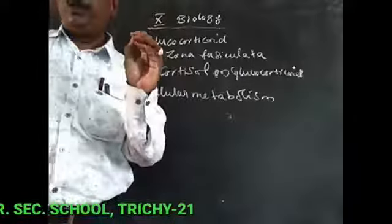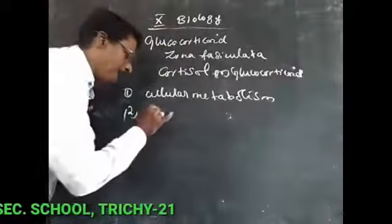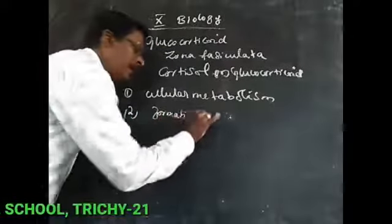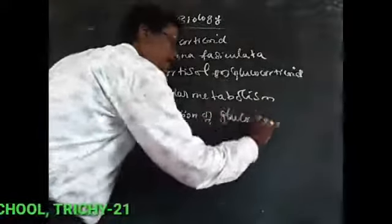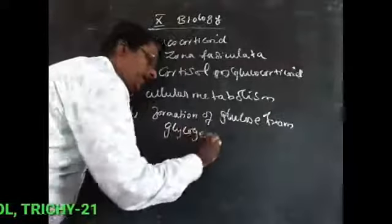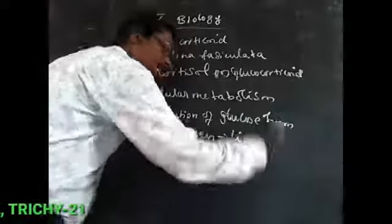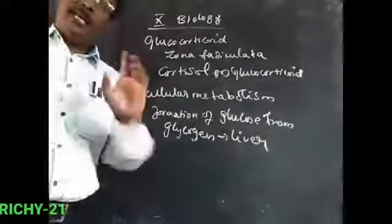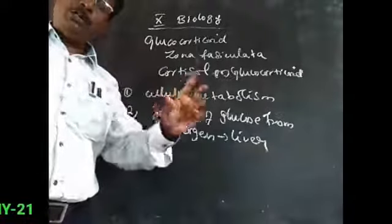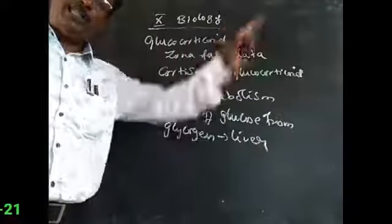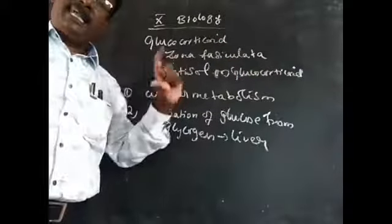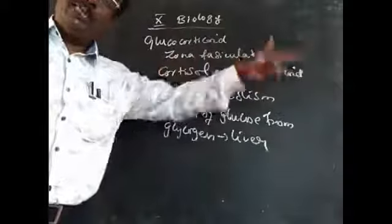Another important function is the formation of glucose from glycogen stored in the liver cell. With the presence of insulin, glucose molecules are converted to glycogen and stored in the liver cell, but glucocorticoid controls the conversion of glucose from glycogen in the liver cell.